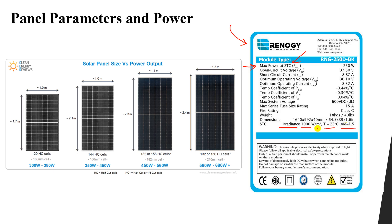The STC conditions are: irradiance of 1000 W/m², temperature of 25°C, and air mass of 1.5, which we have discussed before. At these three conditions, the maximum power produced is 250 watts. We also have the open circuit voltage and short circuit current — when we leave the two terminals open and measure voltage, and when we connect the two terminals together we get the short circuit current.